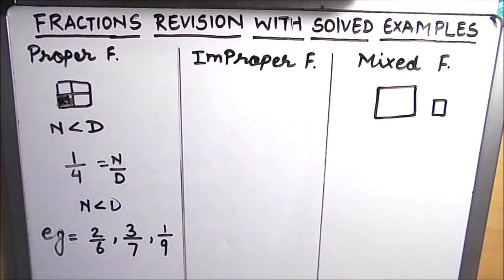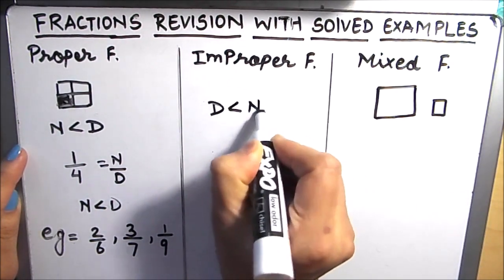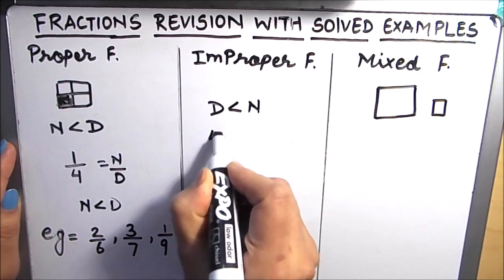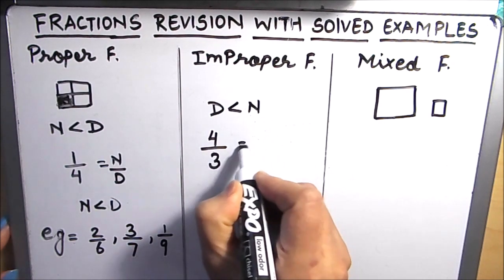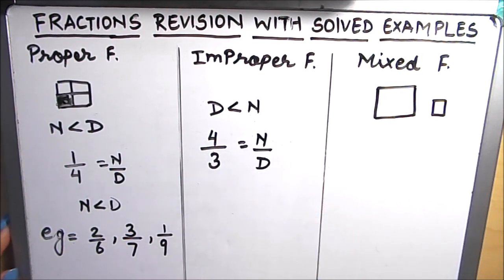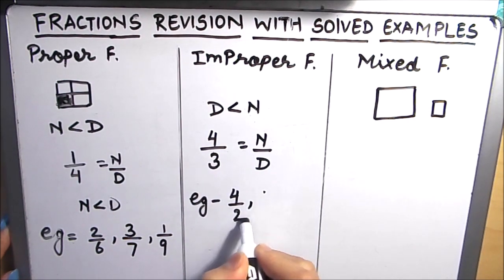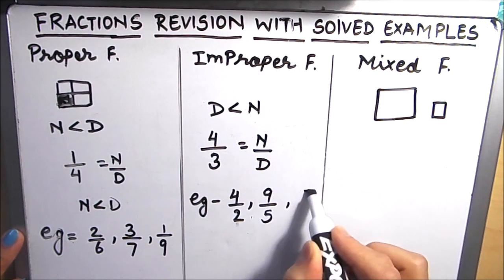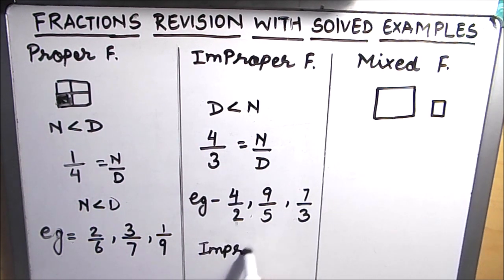Now let's talk about improper fractions. Improper fractions are fractions where the denominator is less than the numerator — that means the top number is more than the bottom number. For example, 4 over 3 is an improper fraction, where the numerator is bigger than the denominator. More examples of improper fractions are 4 over 2, 9 over 5, 7 over 3, and so on. A key point to remember is that improper fractions are always greater than 1.